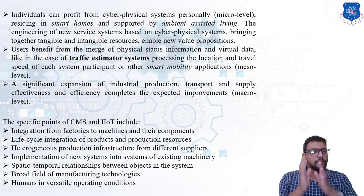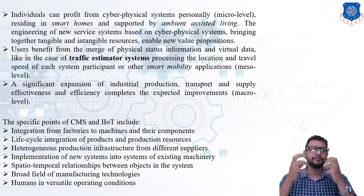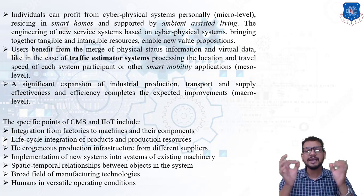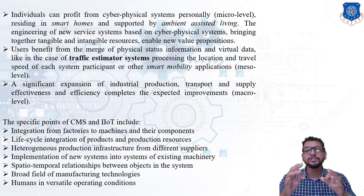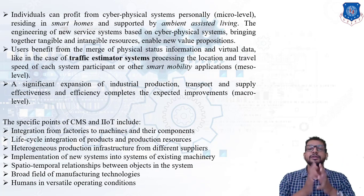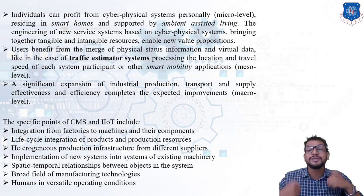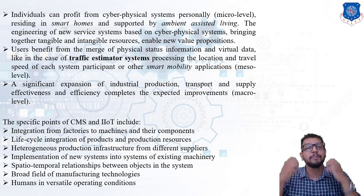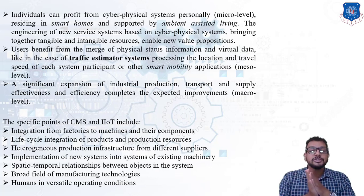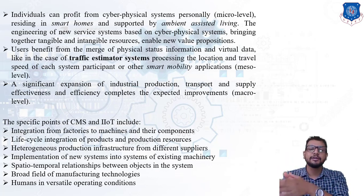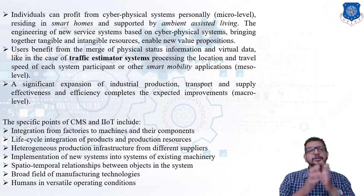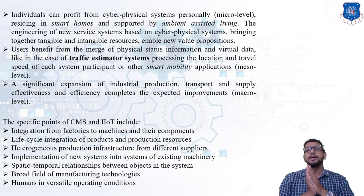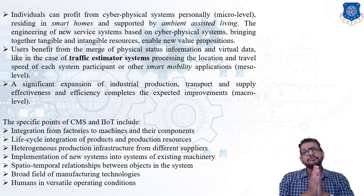There are certain specific points of CMS and IIoT which include: integration from factories to machines and components; life cycle integration of products and production resources as seen in PDM and PLM; heterogeneous production infrastructure from different suppliers; implementation of new systems into existing machinery to improve connectivity, automation, and communications; and spatiotemporal relationships between objects in a system across a broad field of manufacturing technologies and versatile operating conditions. In today's session we covered up to here. In our next session we will see the application maps of a cyber physical system. Stay tuned and thank you all.